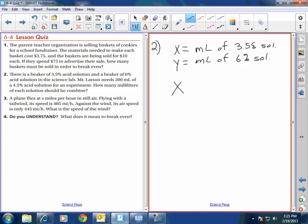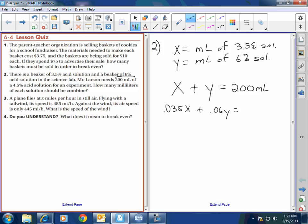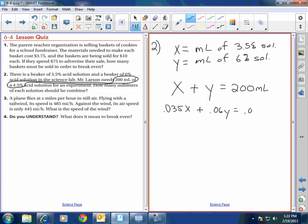Y is the milliliters of the 6% solution, okay? And here it says that Mr. Larson needs 200 milliliters. So aren't the number of milliliters of 3.5% solution plus the number of milliliters of 6% solution must give me 200 milliliters. Does that make sense? And then that's the totals. Now the values. Well, the number of milliliters of the 3.5% solution plus the number of milliliters of the 6% acid solution must equal a 4.5%, but remember it's 200 milliliters of 4.5. So it's 0.045 times 200 because it's of.